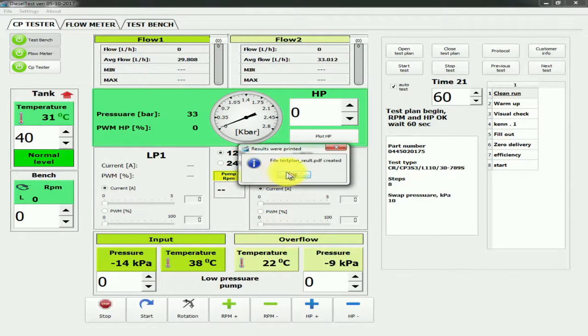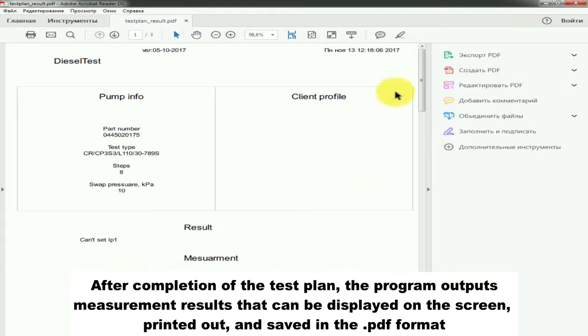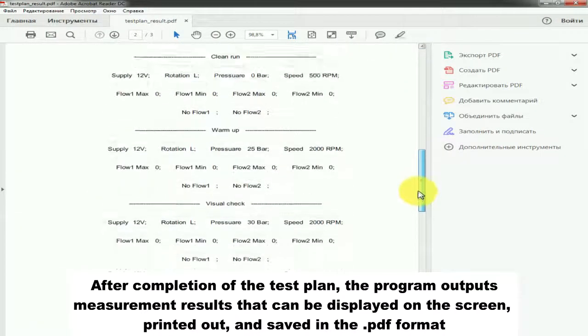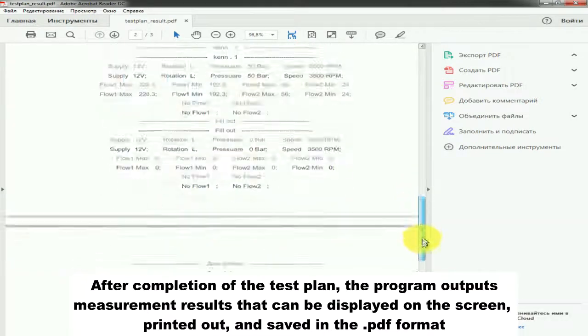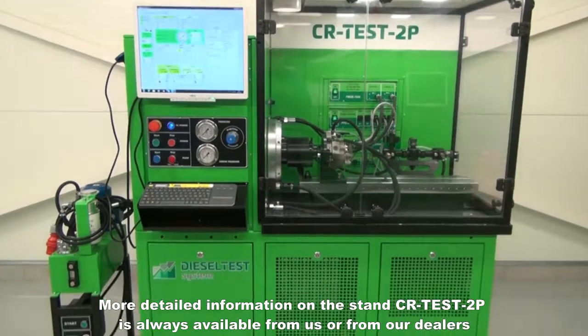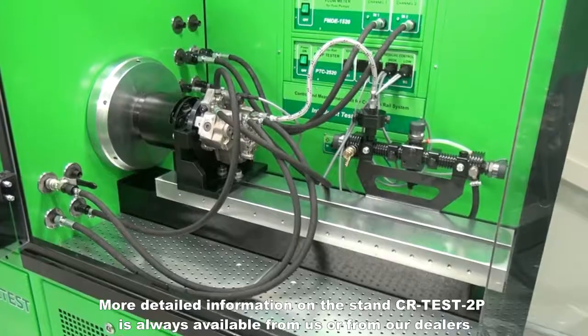After completion of the test plan, the program outputs measurement results that can be displayed on the screen, printed out, and saved in PDF format. More detailed information on the stand CR Test 2P is always available from us or from our dealers.